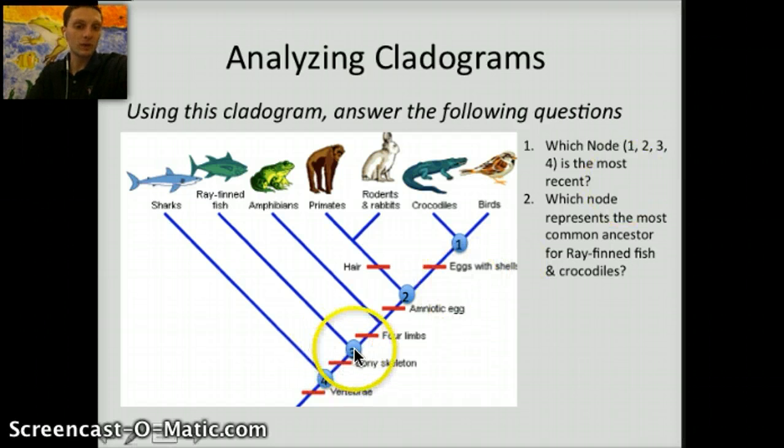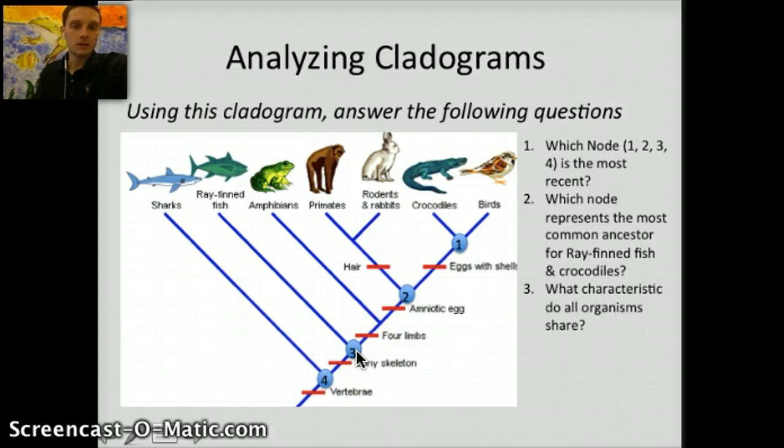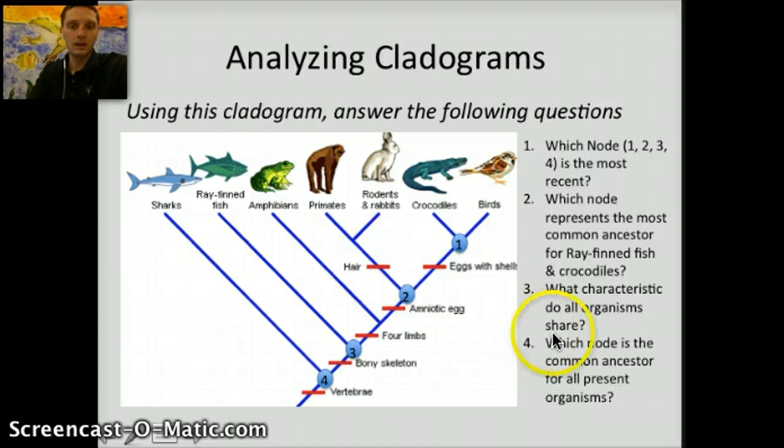Number three, what characteristic do all organisms share in common? That happens to be vertebrae, because that characteristic is on the outside of all these other lines, meaning all of these organisms have vertebrae. And lastly, which node is the common ancestor for all of the present organisms? Hopefully, you were able to identify that as node number four.